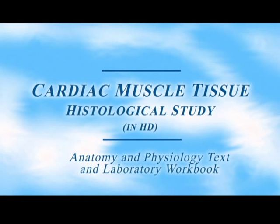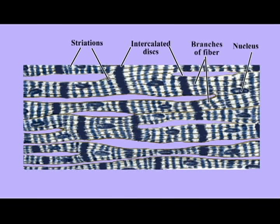Cardiac muscle makes up the myocardium, the muscle of the heart. There are two types of cardiac muscle cells: contractile cells and conductile cells. The dominant cells, typically the only cells seen on cardiac muscle slides, are the contractile cells.